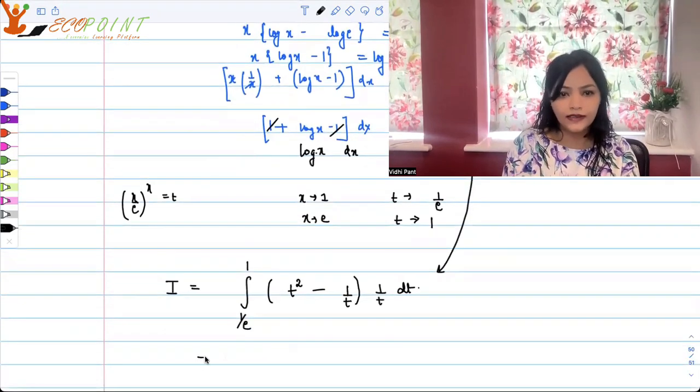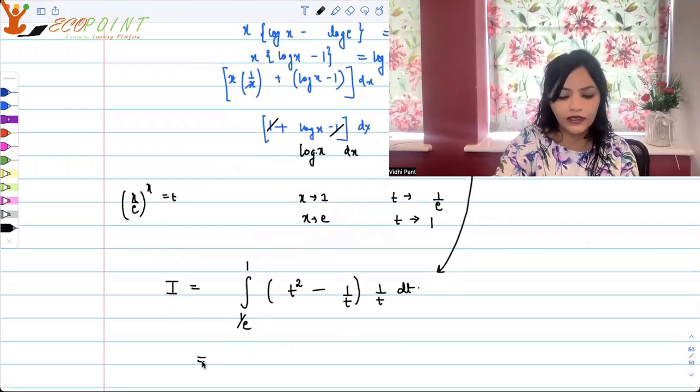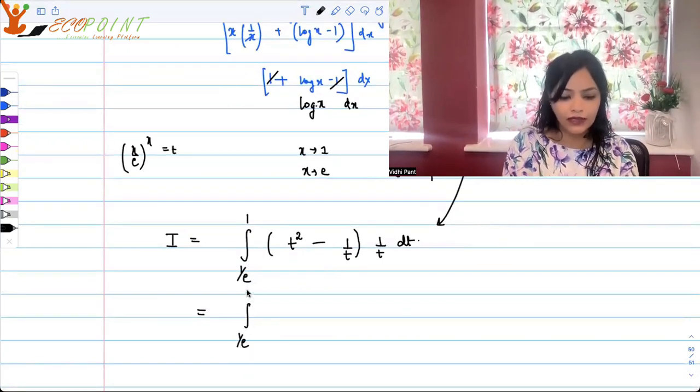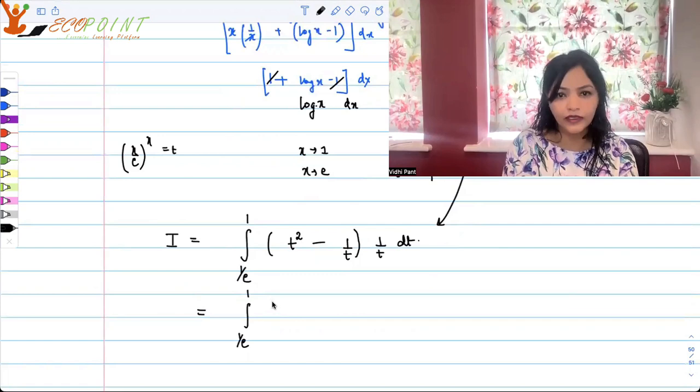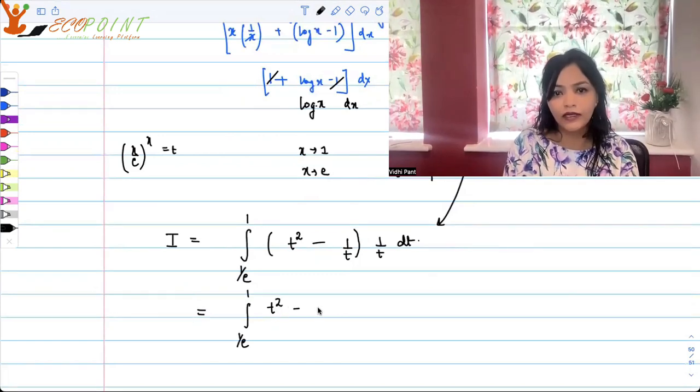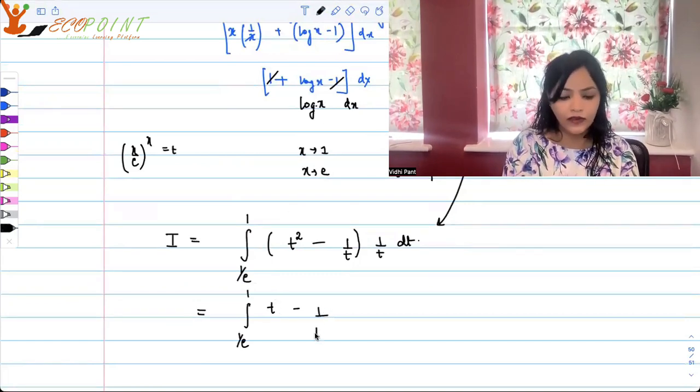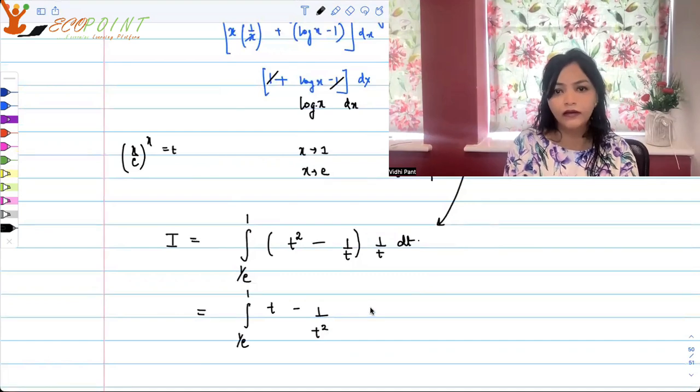So from there, once you reach here, then it's your simple integration. So what you will be doing here is simply you can multiply, take it inside, and you can 1 by e to 1, it is t square minus 1 upon, not t square anymore, multiply by 1 upon t. So you'll have t minus 1 upon t square dt.